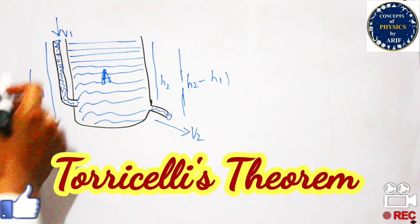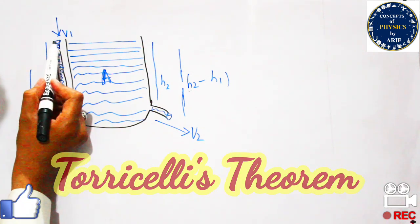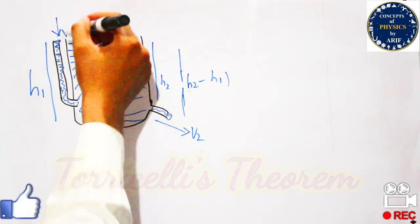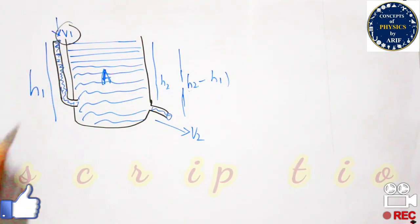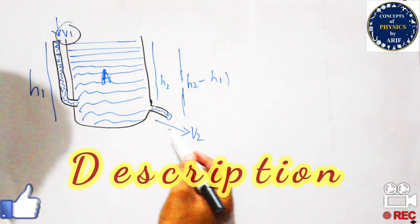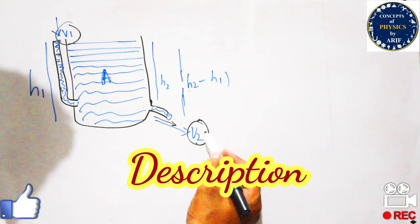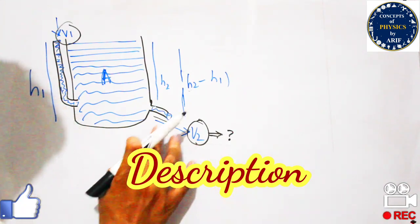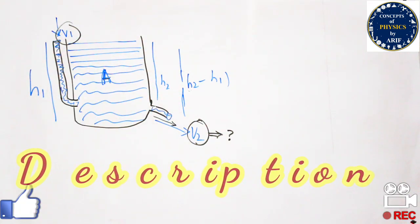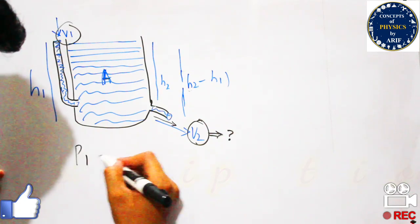We will take water or any liquid in a container of this shape. It has two narrow openings. In the first, fluid is moving in this direction with velocity v1, and the height of this region is h1. The height up to the second nozzle is h2, and fluid flows out of that nozzle with velocity v2. The area of this opening is a.